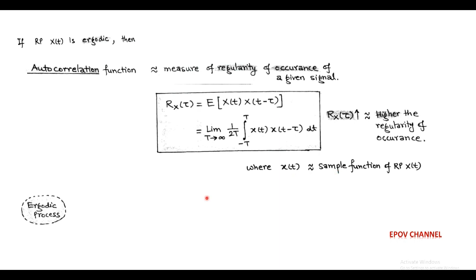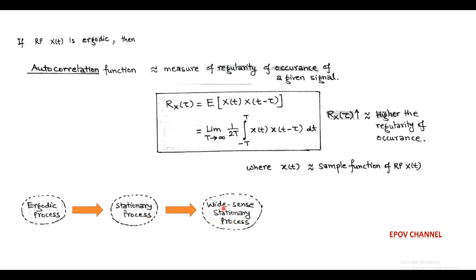All ergodic processes are stationary processes, but all stationary processes need not be ergodic. Similarly, all stationary processes are practically treated as wide-sense stationary processes, which is a type of random process.